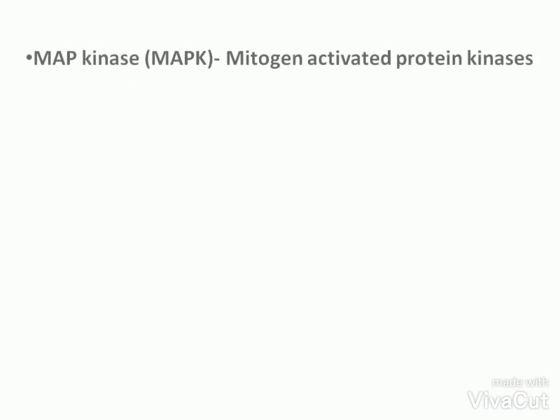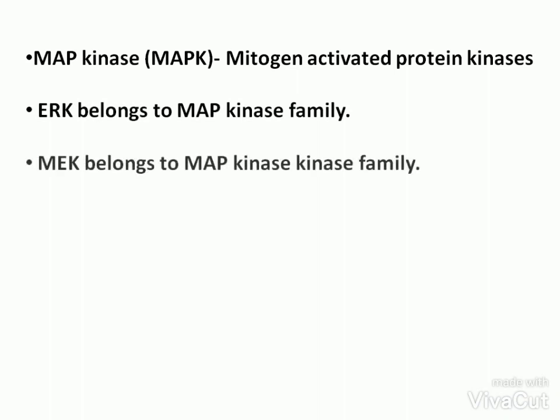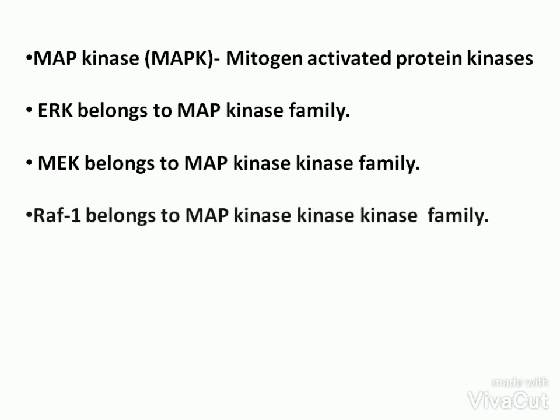These new proteins are needed for cell division. MAPK is mitogen-activated protein kinases. ARK belongs to MAP kinase family, MEK belongs to MAP kinase kinase family, and RAF-1 belongs to MAP kinase kinase kinase family. So this cascade or chain of reaction is called the MAP kinase cascade.